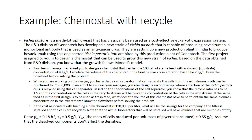Calculate the volume of the chemostat if the final biomass concentration has to be 20 grams per liter. Draw the flow sheet before solving the problem. While you are working on the design, you learn that a cell separator that can separate the cells from the exit stream broth can be purchased for 5 lakh rupees. In an effort to impress your manager, you also design a second setup where a fraction of the Pichia pastoris is recycled using this cell separator.